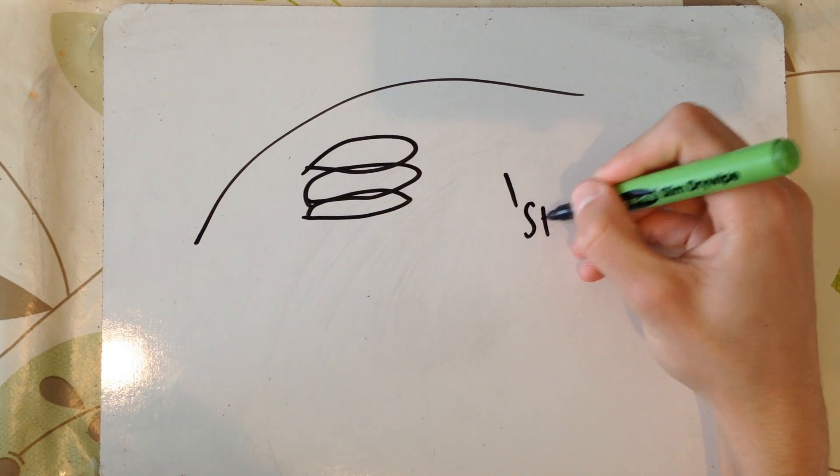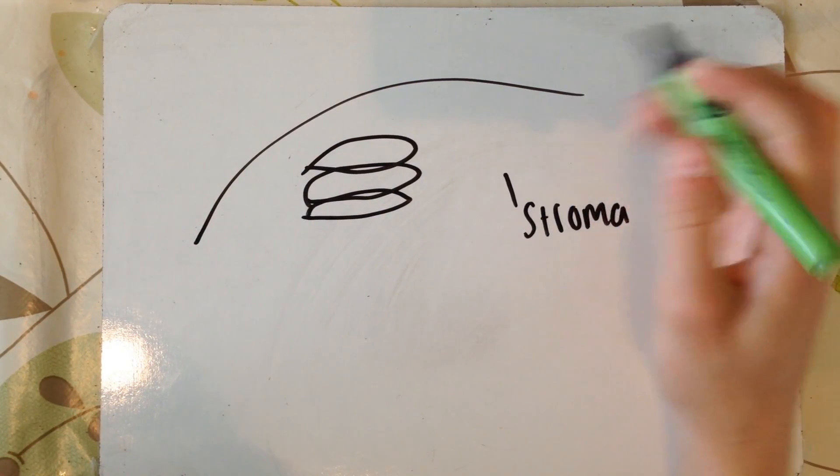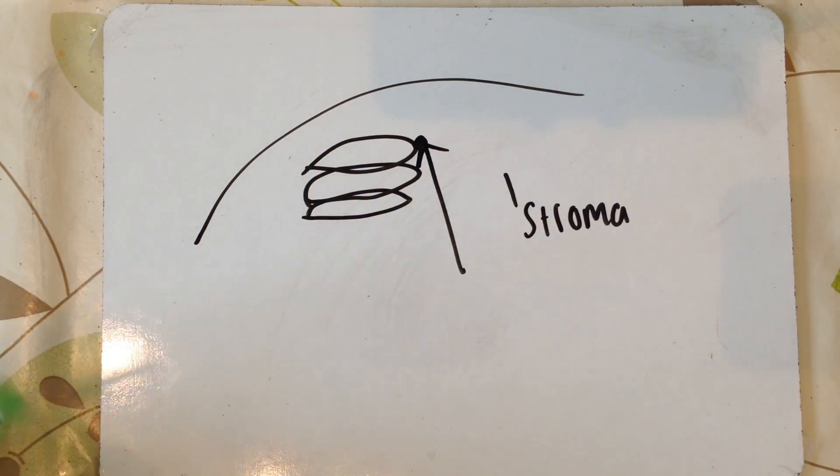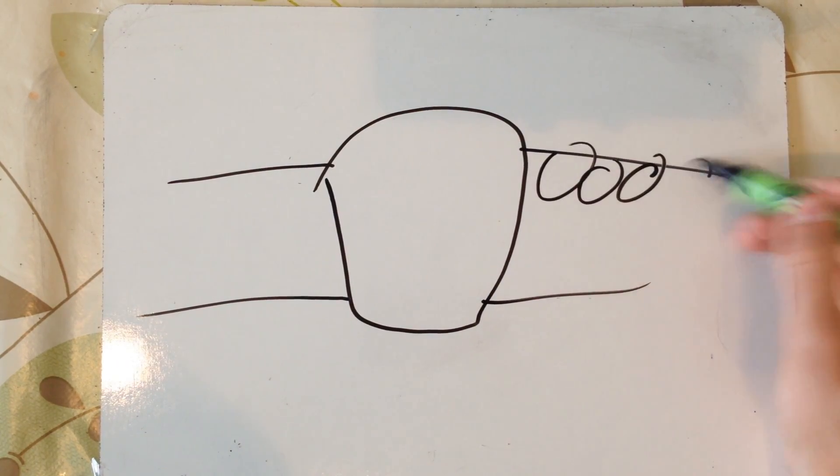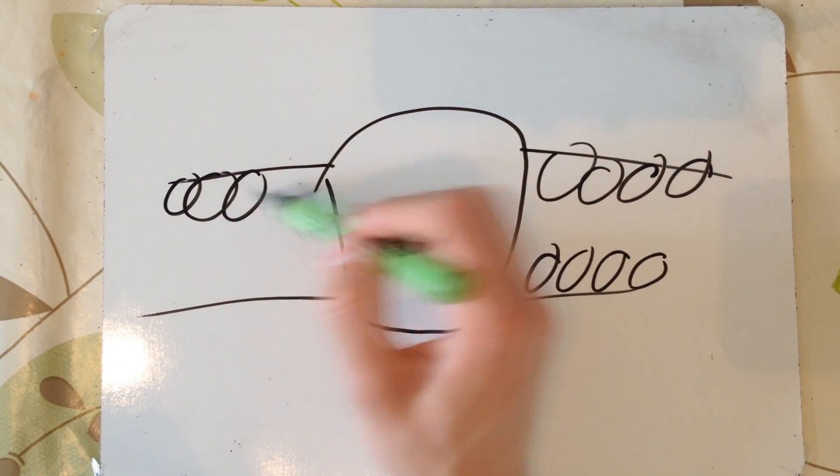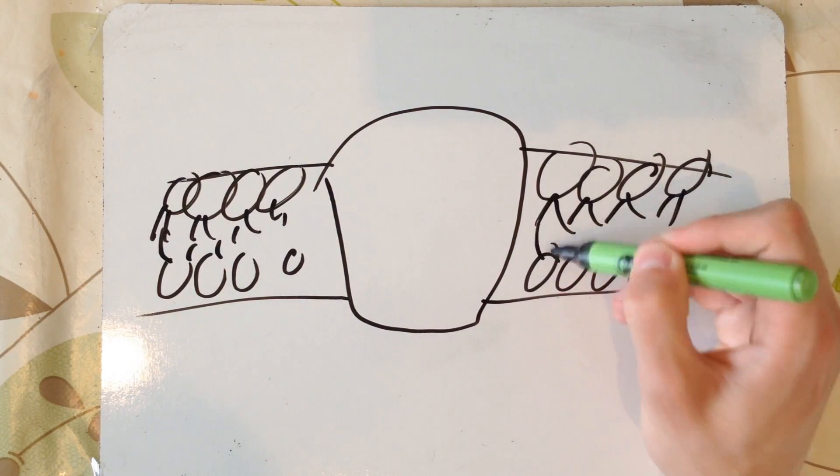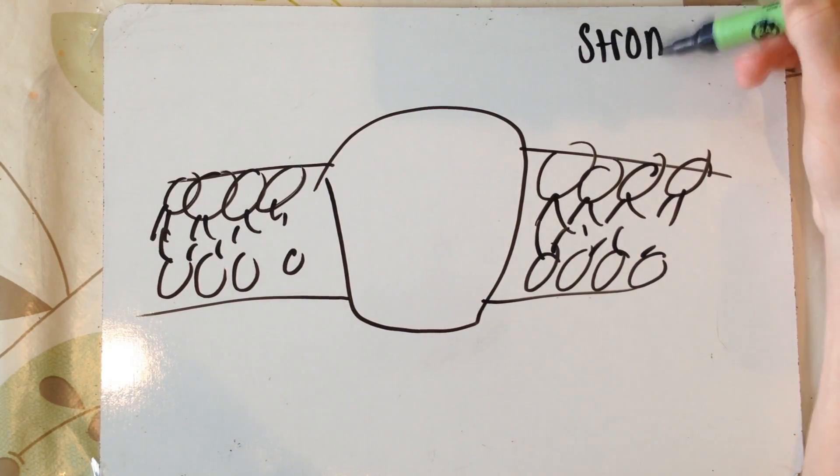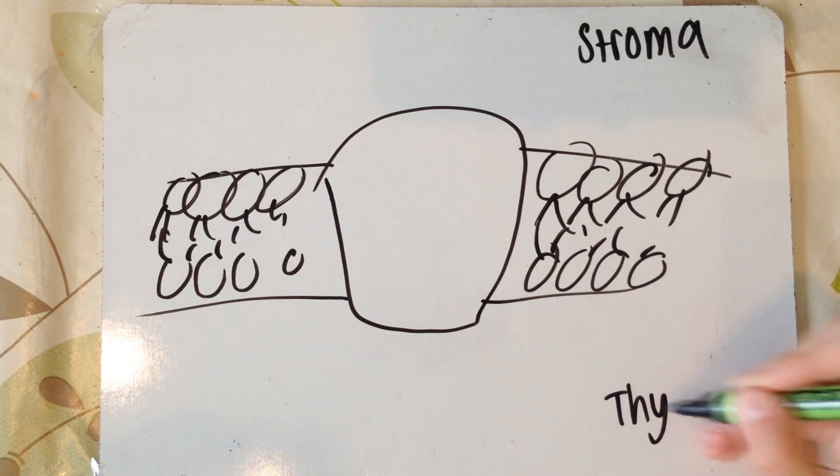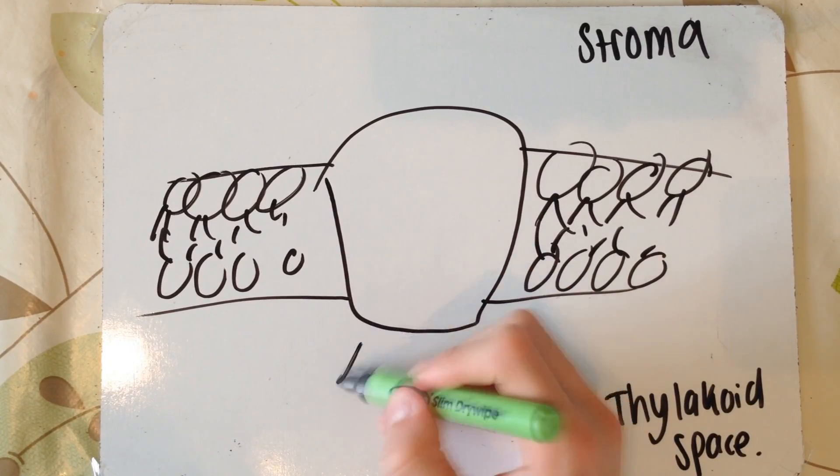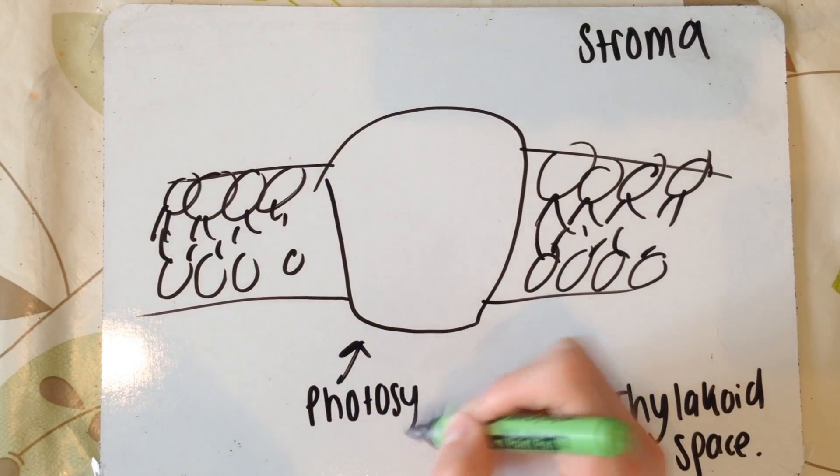As you can see here, you've got the stroma, and now we're going to go to the thylakoid and zoom in a lot and look at the membrane structure. What I'm basically drawing here is the thylakoid structure and the phospholipids and all that jazz. The top part is the stroma and the bottom part is the thylakoid space which is in between the two membranes. And what we've got here in the middle is a photosystem.